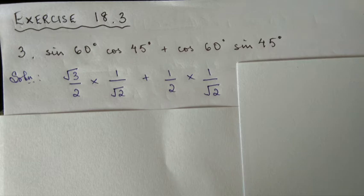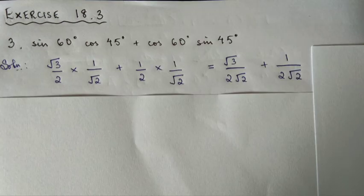Following order of operations, we multiply first, then cancel common terms. Root 3 into 1 gives root 3, divided by 2 into root 2 gives 2 root 2. Plus 1 into 1 is 1, divided by 2 into root 2 is 2 root 2.